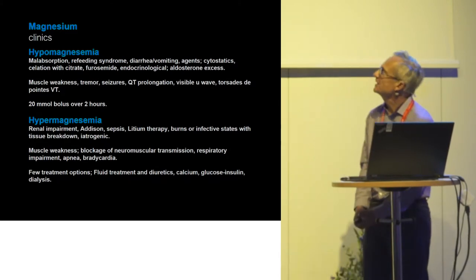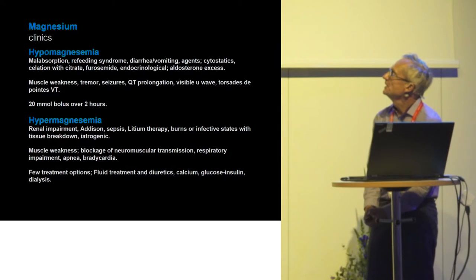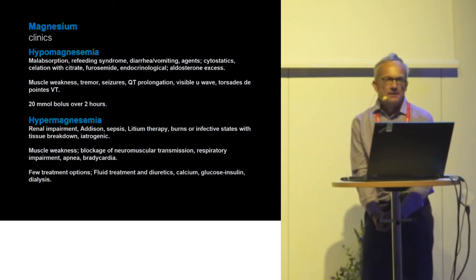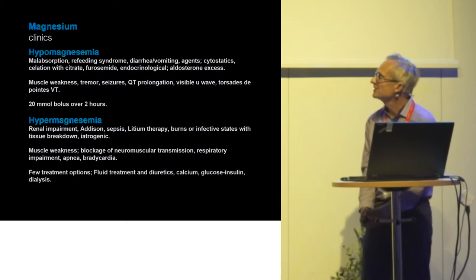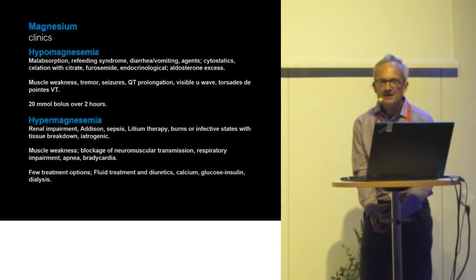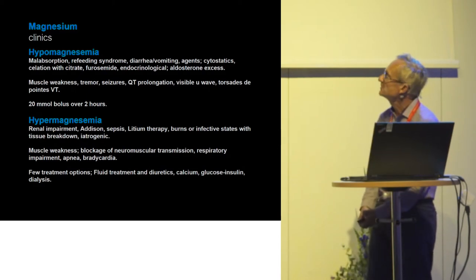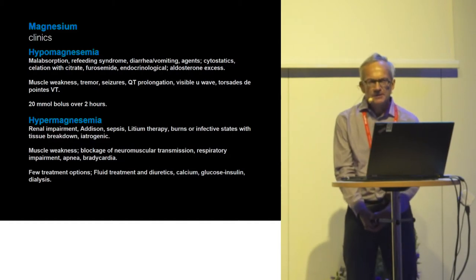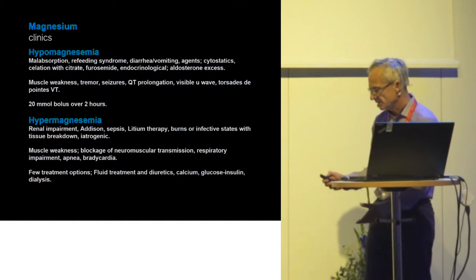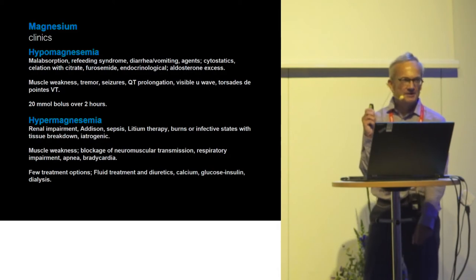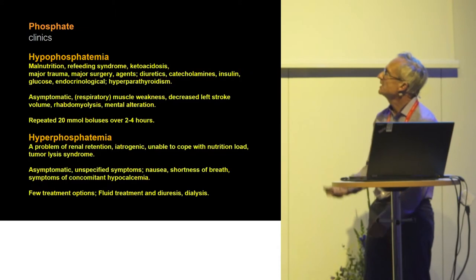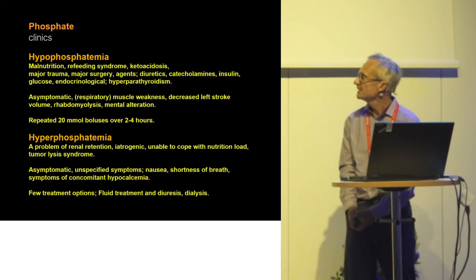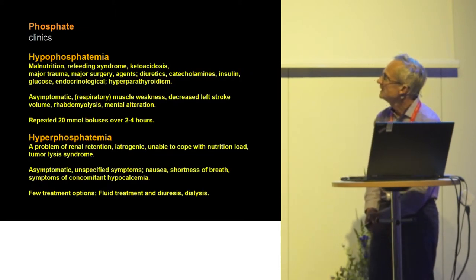Some basic clinical facts about magnesium: hypomagnesemia is too little in, the ion at the wrong place in the body, too much out, and disabled control mechanisms. Hypermagnesemia is much a problem of renal retention. We can find very much text in textbooks and articles about hypomagnesemia, hypermagnesemia, hypophosphatemia, and hyperphosphatemia.